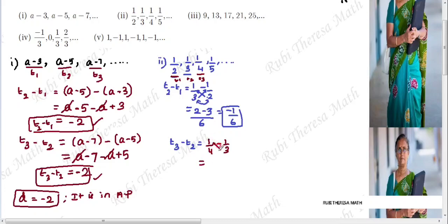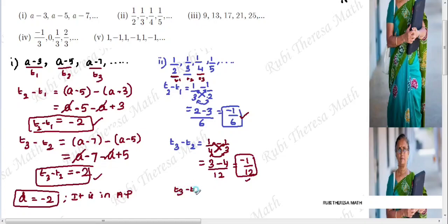Now find T3 minus T2: that is 1/4 minus 1/3. Cross multiply because denominators are different. We get (3 - 4) over (4×3) = -1/12. Since T2 - T1 = -1/6 but T3 - T2 = -1/12, the differences are not equal. Therefore, this sequence is NOT in AP.